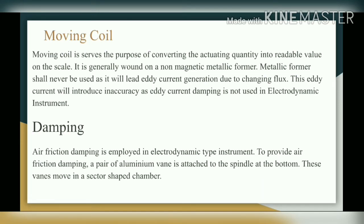The moving coil serves the purpose of converting the actuating quantity into a readable value on the scale. It is generally wound on a non-magnetic metallic former. A metallic former shall never be used as it will lead to eddy current generation due to changing flux, which will introduce inaccuracy since eddy current damping is not used in this instrument. The moving coil is connected to the pointer, so when the moving coil moves, the pointer deflects and you can read the measurement on the wattmeter.